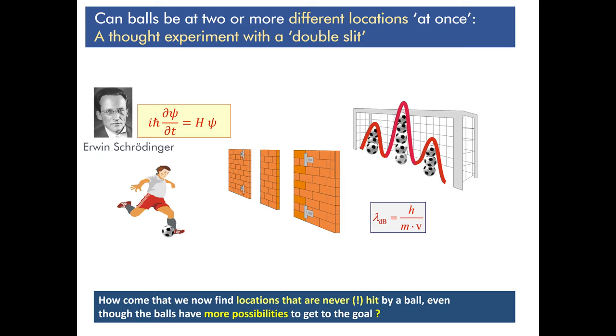So how come that the ball knows about locations that it cannot probe as a classical object? Well, the answer is, it's not a classical object. It's a quantum object. It's a quantum wave as described by Schrödinger's wave equation. And Erwin Schrödinger, one of the most famous Austrian physicists, actually was inspired by Louis de Broglie's idea and wrote up a wave equation. And that essentially describes what we see.